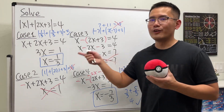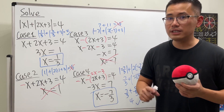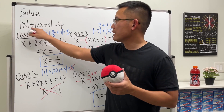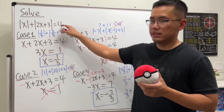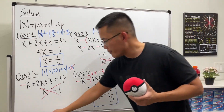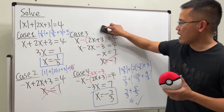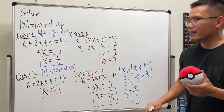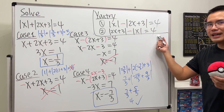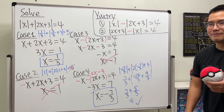Be really careful when solving double absolute value equations, especially when you have one absolute value plus another equal to a number. I'm going to give you two similar practice questions — go ahead and try them and comment your answers below.